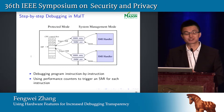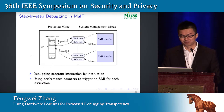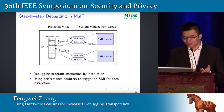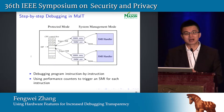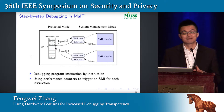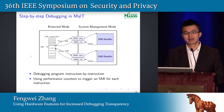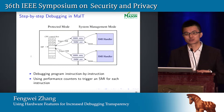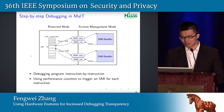We have implemented several debugging functions in the MAUT system. One is step-by-step execution, achieved using the performance counter. The performance counter is a hardware feature that can count hardware events. To implement instruction-by-instruction execution, we set the performance counter to its maximum value and configure it to count retired instructions. When the next instruction retires, the counter overflows, generating an exception, which we reroute to become a system management interrupt. This allows us to trigger an SMI for each instruction. We can also use other hardware events to implement different stepping modes.